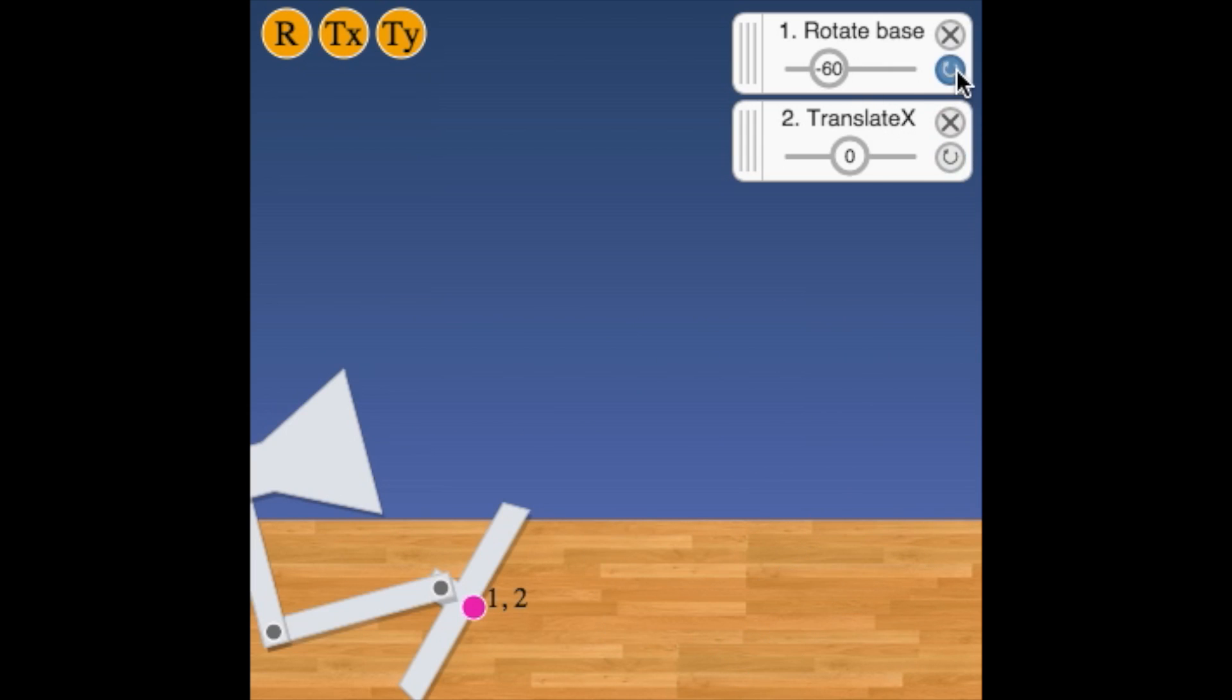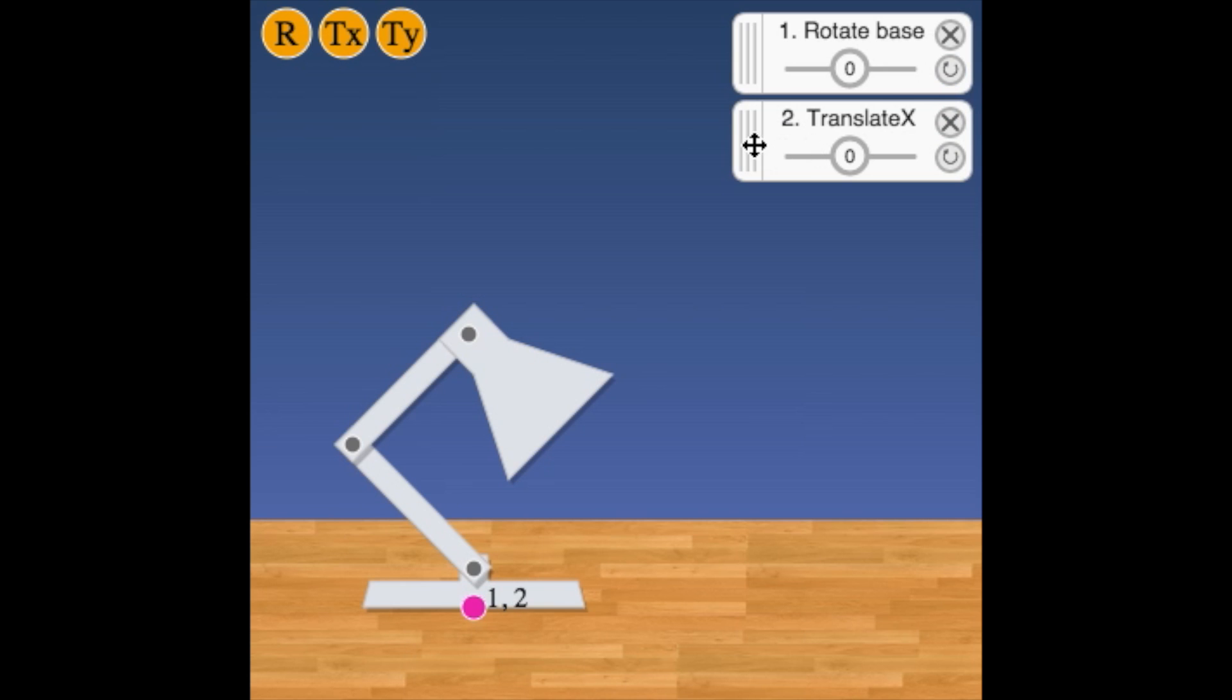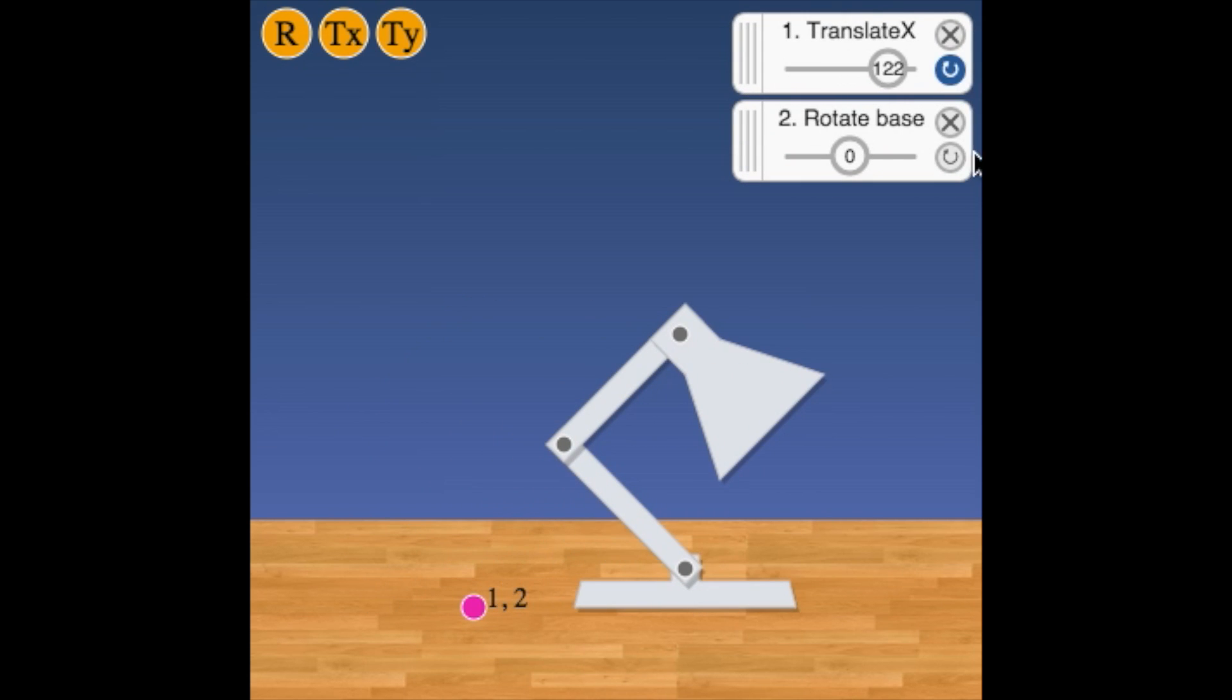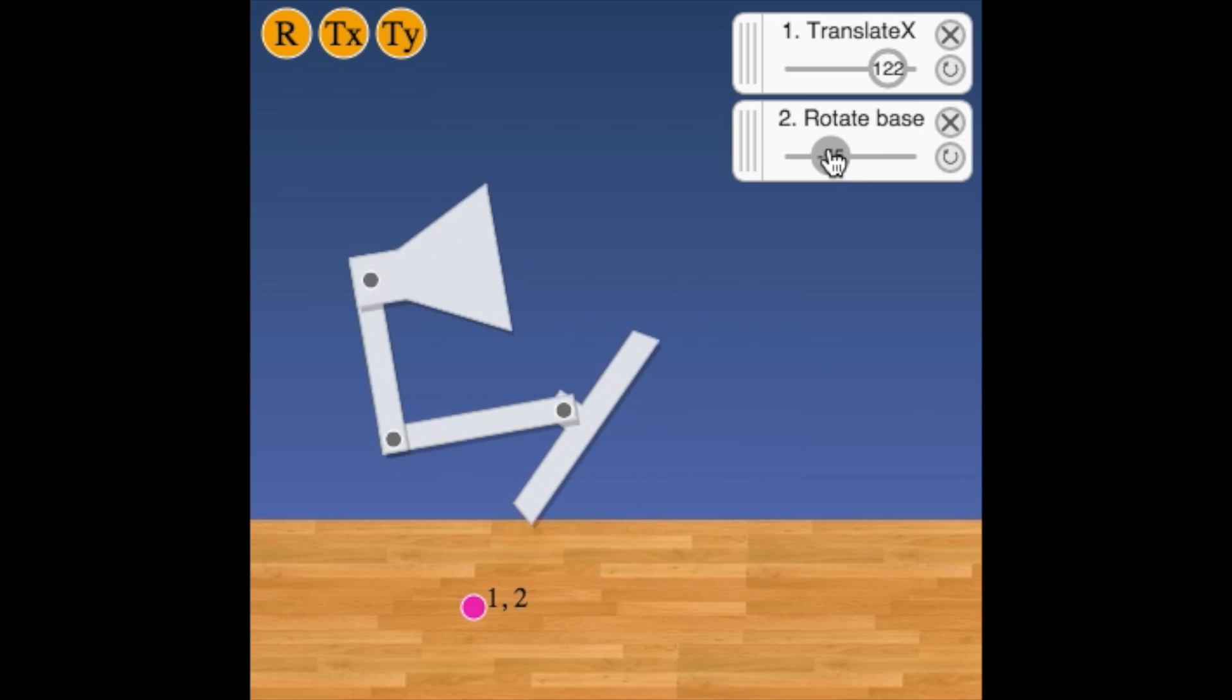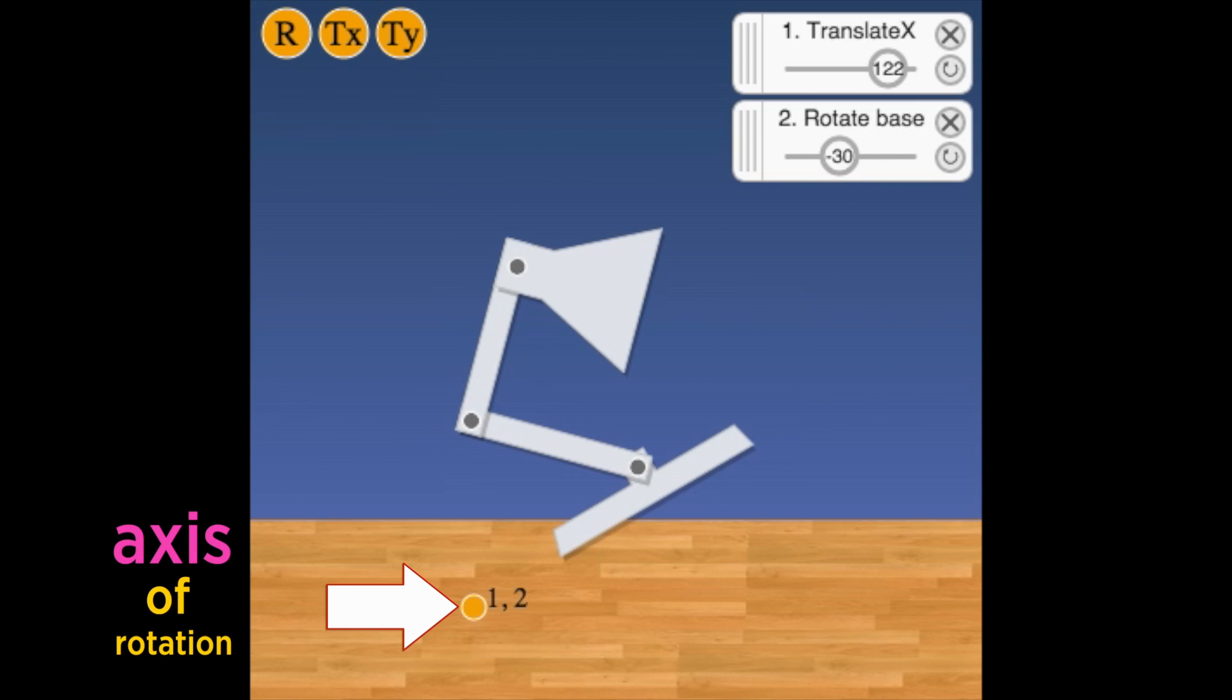But if our deformers operate in the wrong order, translate and rotate, we will run into a problem. The rotation of the lamp will move away from the pose like this. That's because we move the lamp away from the axis of rotation which is the initial position of the base.